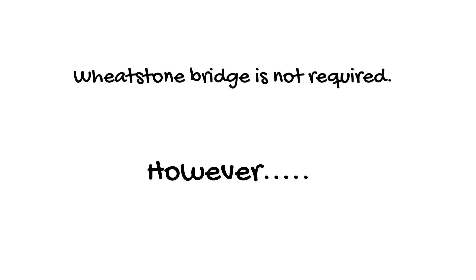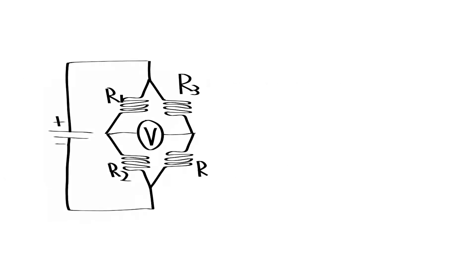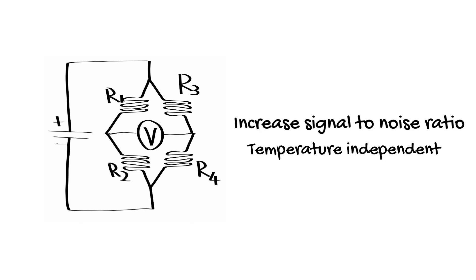Modern arterial line transducers no longer require a Wheatstone bridge to measure the resistance of the strain gauge. They have, however, retained the Wheatstone bridge. In this case, by having two strain gauges on either side of the Wheatstone bridge circuit. This increases the signal-to-noise ratio and also makes the system independent of temperature which can affect the electrical resistance of a strain gauge.